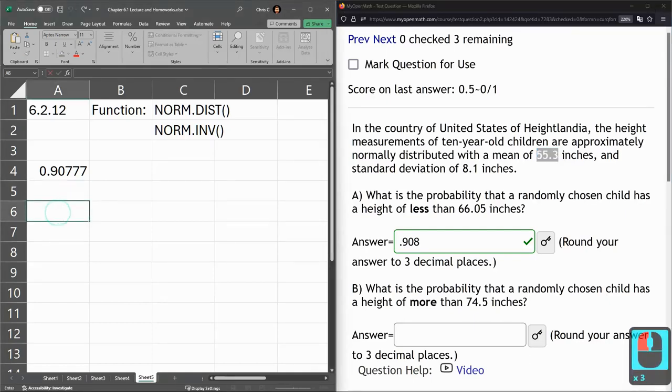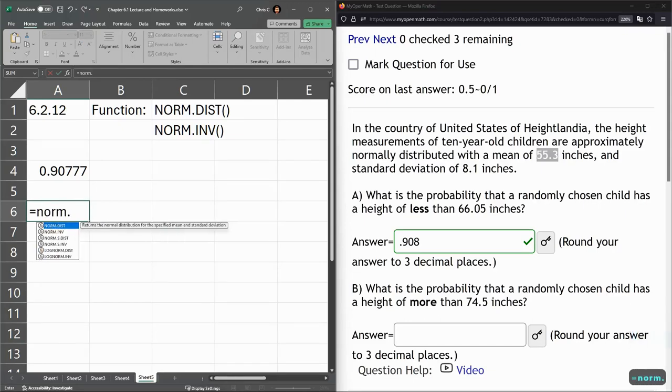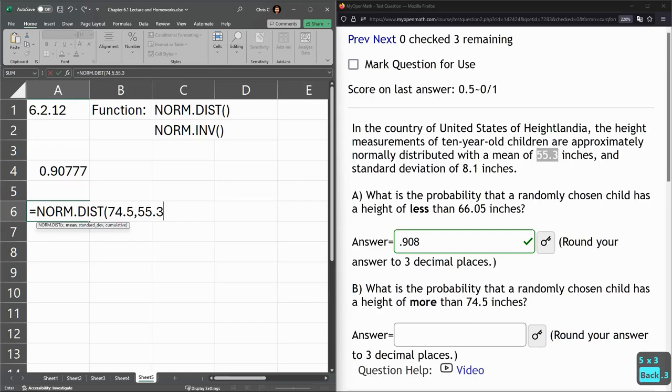So we're going to use the same function we did before, norm.dist, and x is now 74.5. All right, same mean, same standard deviation, 55.3, 8.1 is the standard deviation, and we're going true. So there's all the values I used.